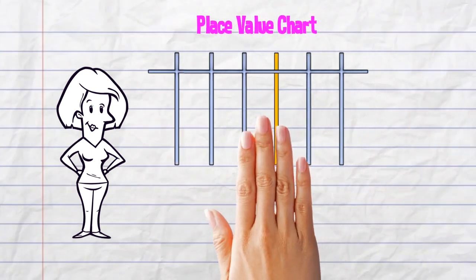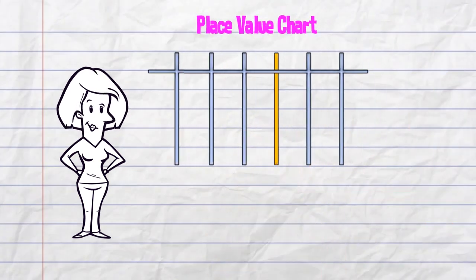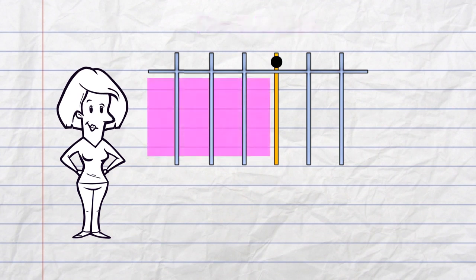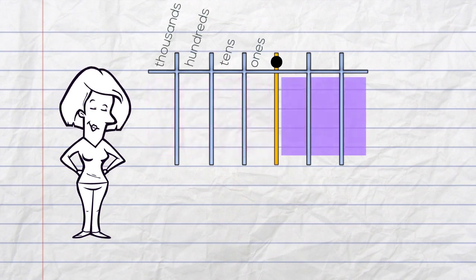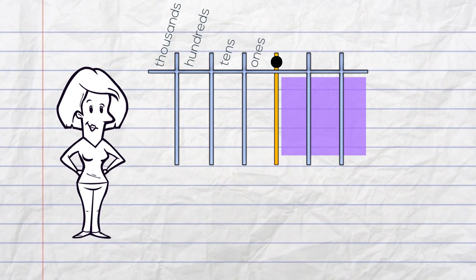Here's a place value chart. The decimal point goes here. On the left of the decimal is where we put our whole numbers. And on the right of the decimal is where we've got our fractional parts.